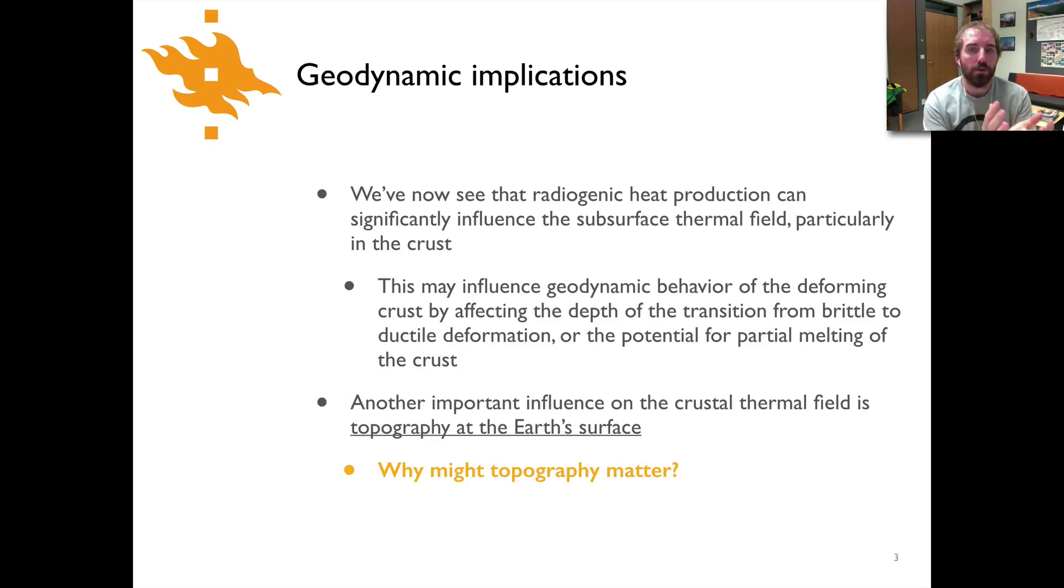Going back to the previous lecture we looked at how the heat production can influence things like the temperature field. We saw that for high heat production values or constant concentrations of heat producing elements we have very high temperatures predicted and that depending on the temperatures we have at depth within the earth that can change things like where rocks might begin to partially melt or the transition from brittle deformation to ductile deformation and viscous flow within the earth.